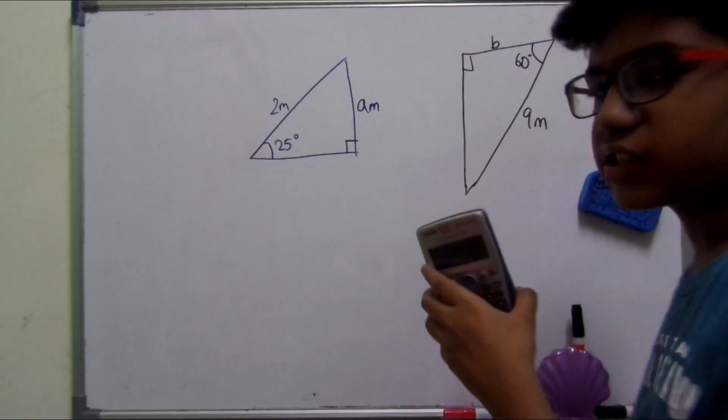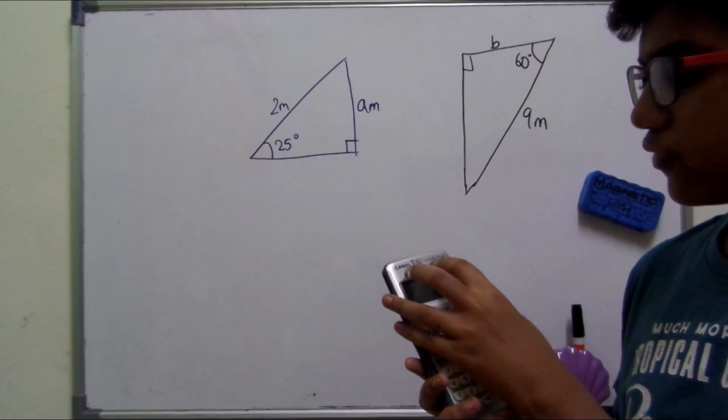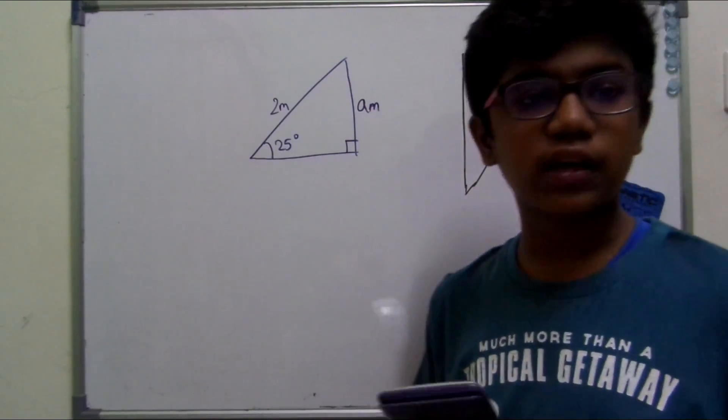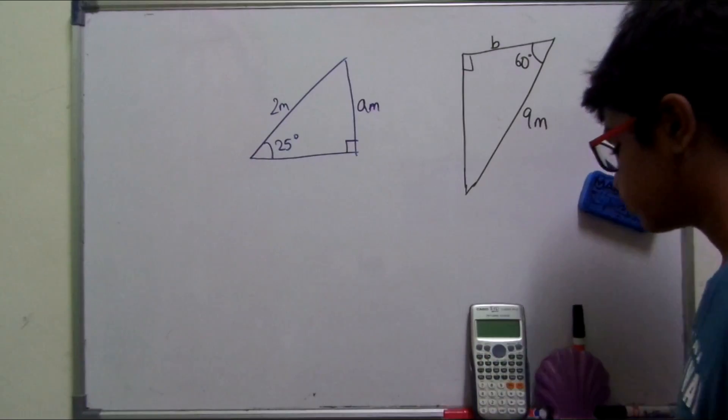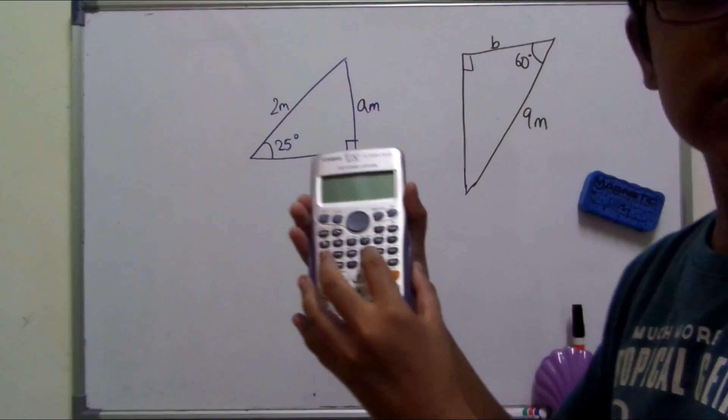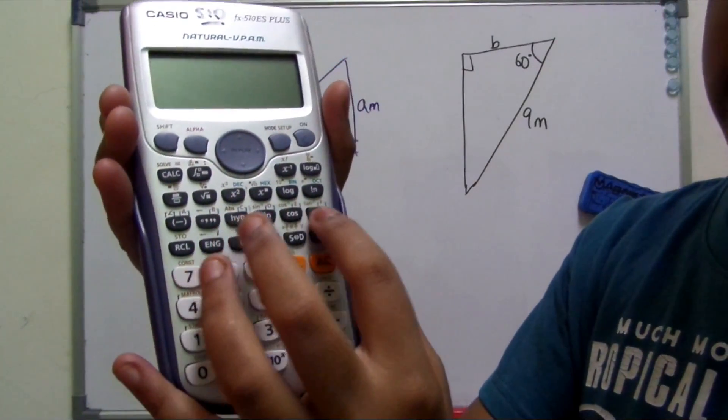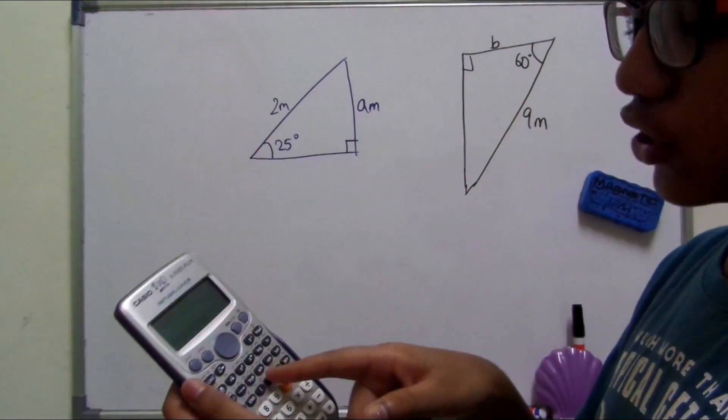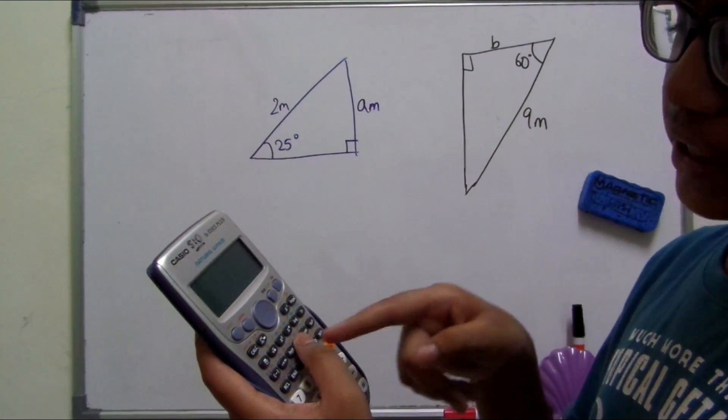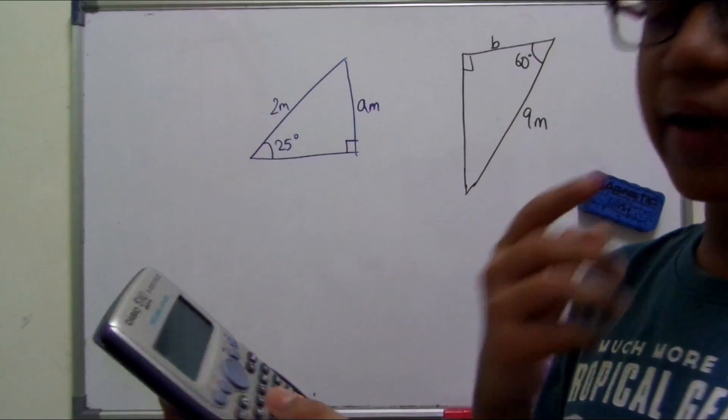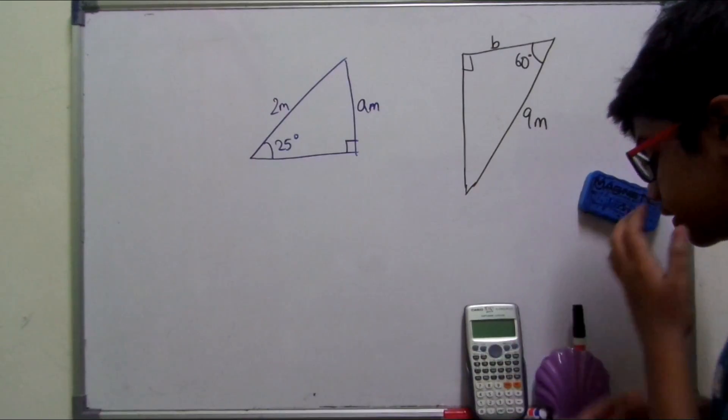So here we are going to need a scientific calculator. A basic one will do. This is an FX570ES which is completely allowed in Cambridge exams, and you can use any sort of calculator that is scientific and has the following functions: sine, cosine, and tangent. It would be nice if it had more functions, but you just need a calculator that has these three.